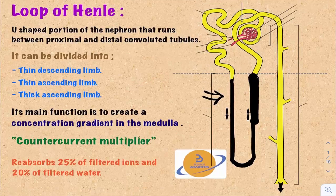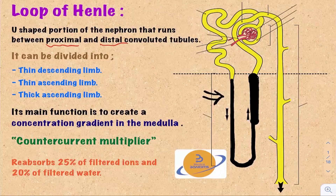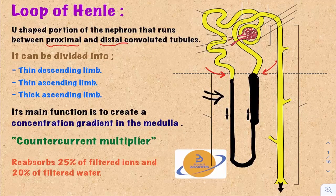The Loop of Henle is the loop-shaped or U-shaped structure of the nephron that runs between the proximal convoluted tubule and the distal convoluted tubule. It's named after the German anatomist Jacob Henle.